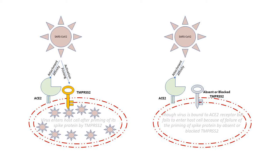Another example: in order to board a flight we require both the airline ticket as well as the boarding pass — both are necessary. Similarly, the co-expression of ACE2 and TMPRSS2 in the vicinity of each other within specific organs is important, as shown in figure 2 of the article.